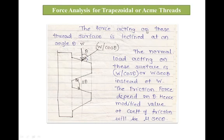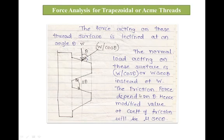Now let us see the force analysis. The methodology of the force analysis is almost the same. You can use the formulation of trapezoidal and ACME thread as it is, just by replacing μ by μ·secθ. Here, 2θ is generally taken as the included angle, and the force acting on the thread surface is inclined at an angle θ. Therefore, the normal load acting on this surface is taken as W·secθ, and the friction force depends on θ, the semi-included angle.